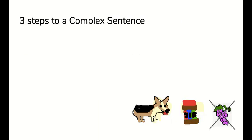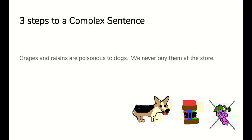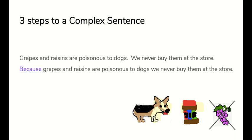So three steps to a complex sentence. Take two independent, independent simple sentences that would go really well together. Okay, makes sense. Grapes and raisins are poisonous to dogs. We never buy them at the store. Decide which coordinate conjunction you want to put in front of there from that list. Because grapes and raisins are poisonous to dogs, we never buy them at the store.